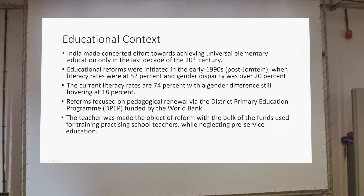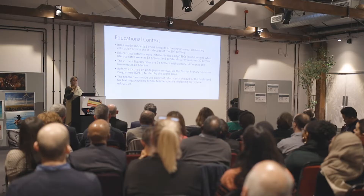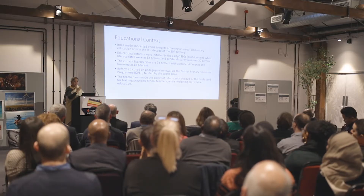I'll now come to the educational context. India started focusing on universalizing elementary education only in the late 20th century, and the education reforms began with the World Bank-funded DPEP — the District Primary Education Program — in the early 1990s. At that time we were 52 percent literate and the gender disparity was 20 percent. We are still hovering at 18 percent on that. These reforms were focused on pedagogical renewal, but the teacher became the object of reform rather than a partner in the reforms, and that has been a major problem.